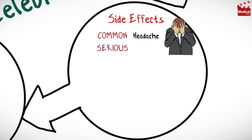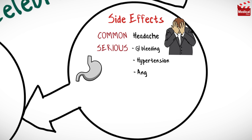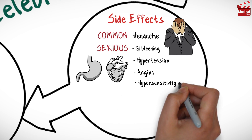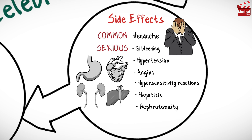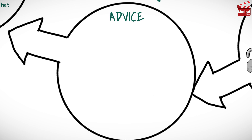Headache is a common side effect of Silicoxib. Severe side effects that may occur include gastrointestinal bleeding, hypertension, angina, hypersensitivity reactions, hepatitis, nephrotoxicity, anemia, and neuropathy.